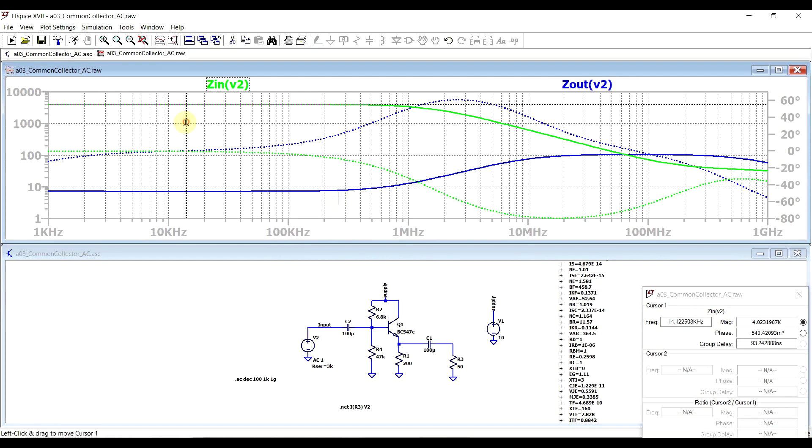We're getting a very large input impedance, something in the 4 kiloohm range, whereas the output impedance is in the sub-10 ohm range. At least up until a frequency where we have sufficient gain.